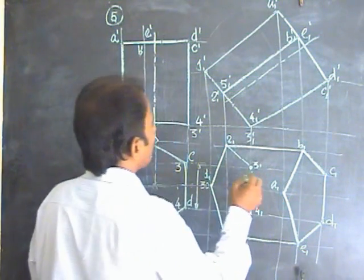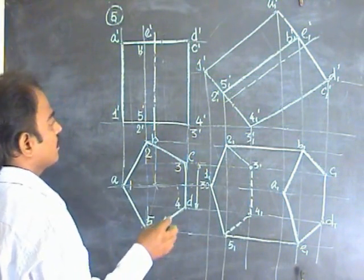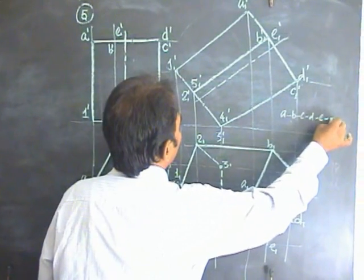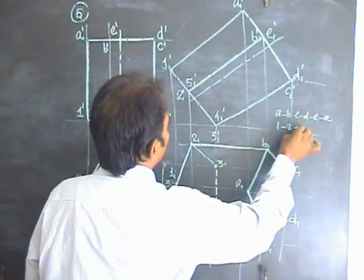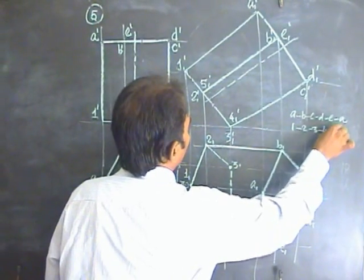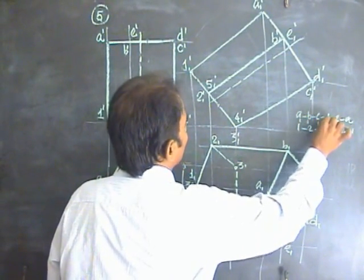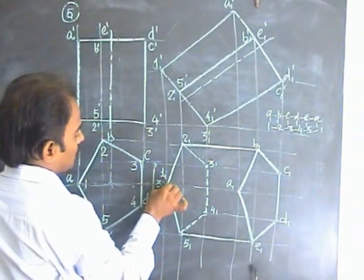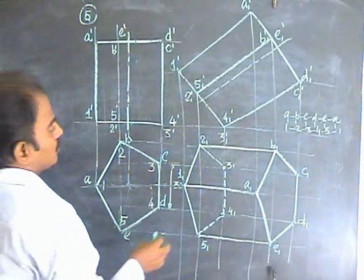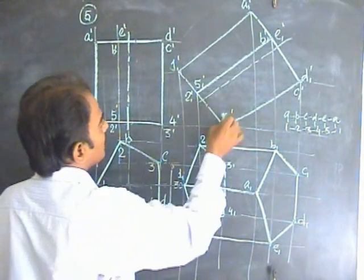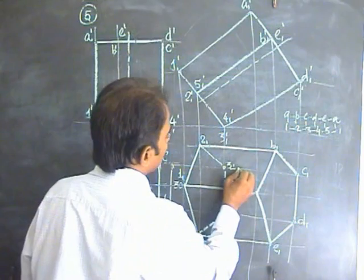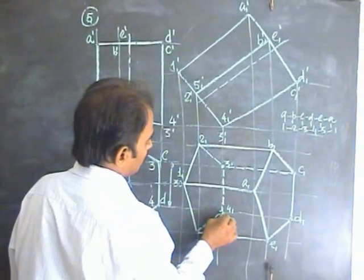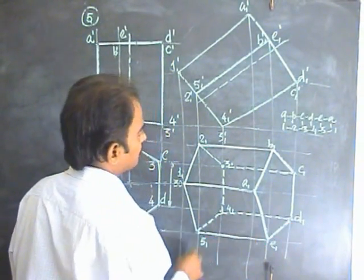Follow the actual order and join: A with B, B with C, C with D, D with E. For the lateral edges: A1-1A is at the top, so it is visible. 2B is at the edge. 3C is at the bottom, so 3C is invisible — draw a dotted line. 4D is also at the bottom, so 4D is invisible. 5E is at the edge.